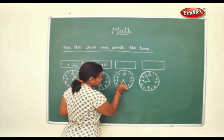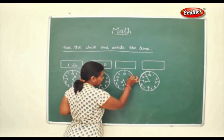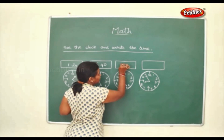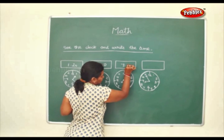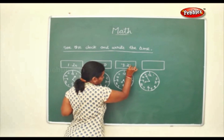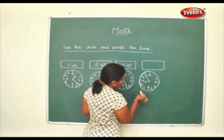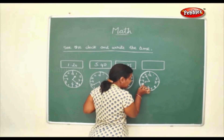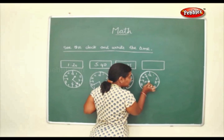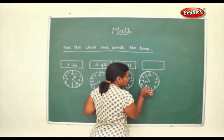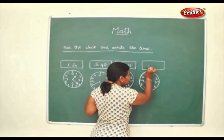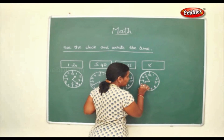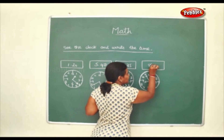Here the short hand is at 7, the long hand counting 5, 10, 15, 20, 25 — so this is 7:25. Now here the short hand is near 9 but it is not yet 9; it still lies near 8. So counting: 5, 10, 15, 20, 25, 30, 35, 40, 45, 50, 55 — this is 8:55.